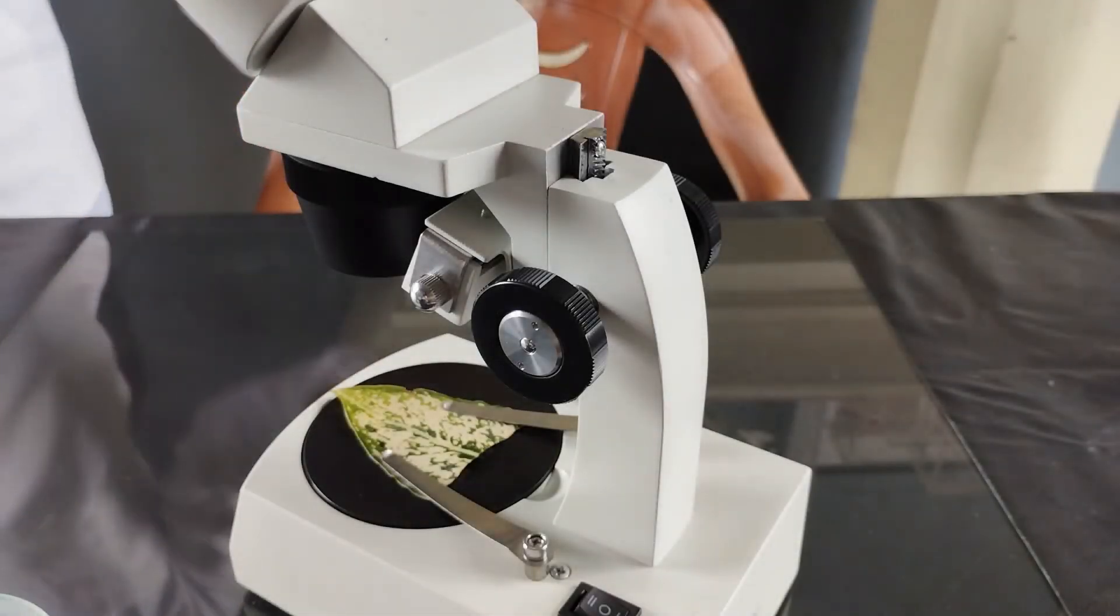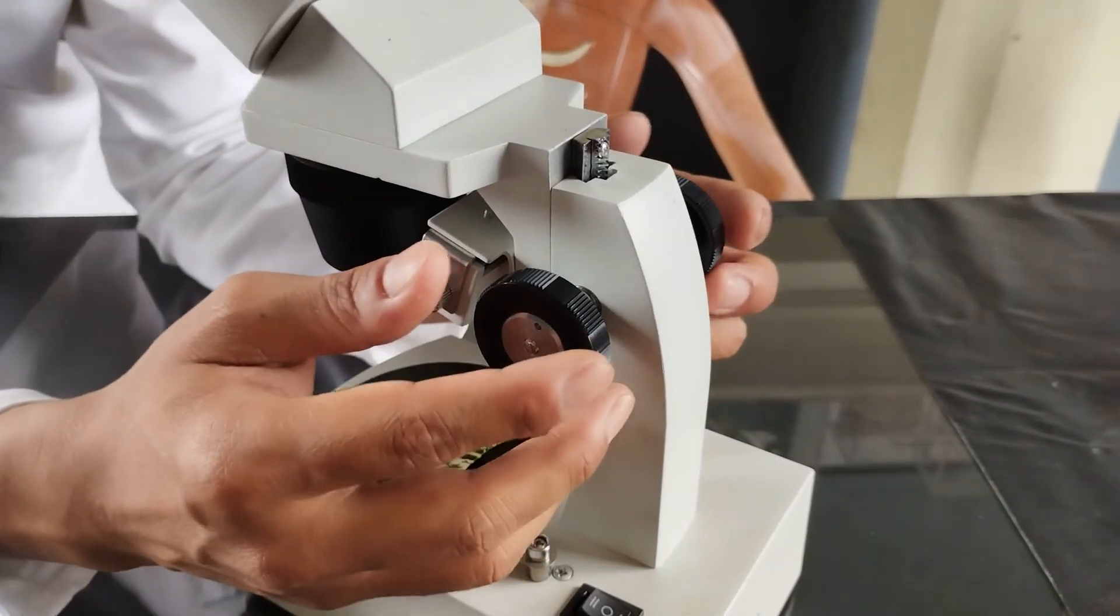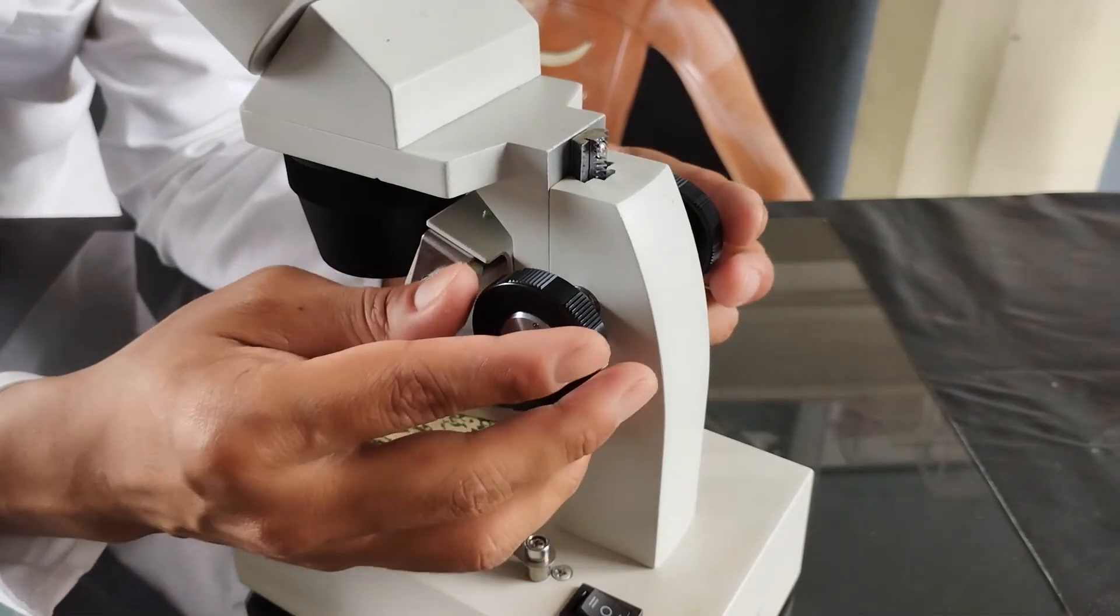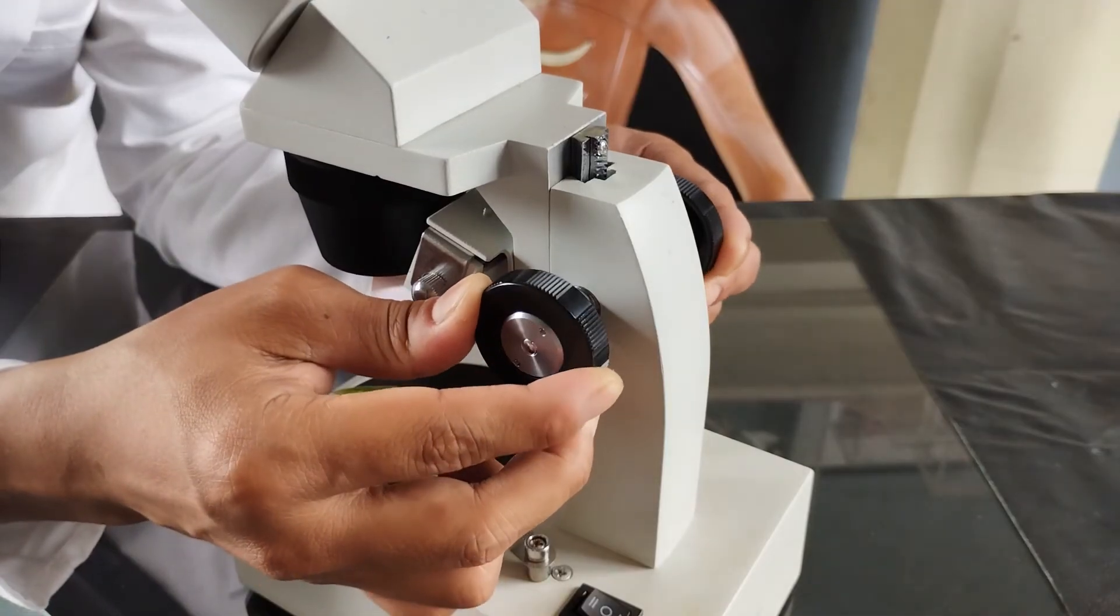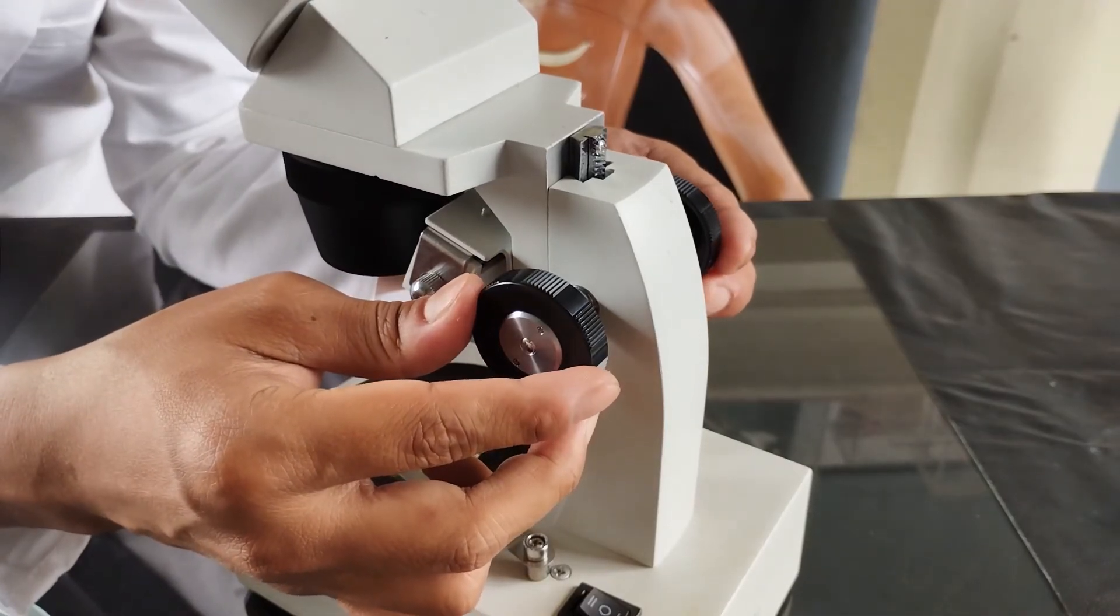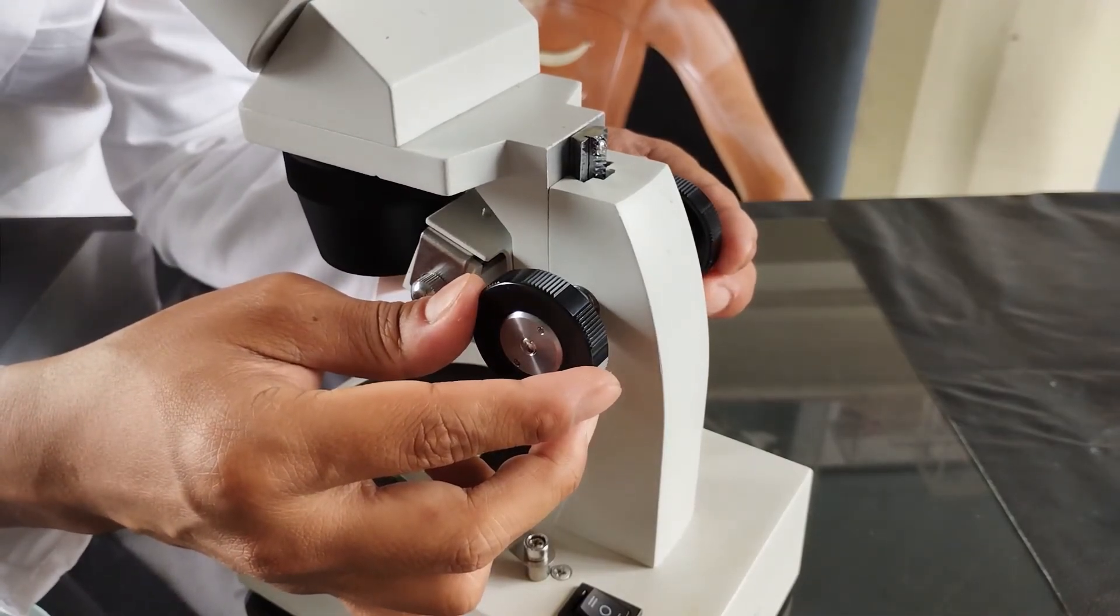Now once the eyepiece distance has been fixed and focus aligned, the objective magnification selected and the specimen placed on the stage, turn the focus adjustment knob clockwise and counterclockwise until the specimen comes into clear focus. Observe and study the specimen.